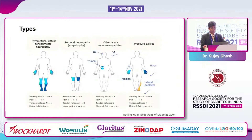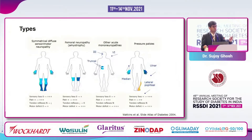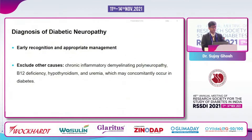I'm not going to bore you about the kinds or types of diabetic neuropathy, but I would predominantly concentrate on diffuse symmetrical sensory motor neuropathy, or predominantly sensory neuropathy that happens in diabetes, because that's what we are most importantly concerned about, and of course about autonomic neuropathy.